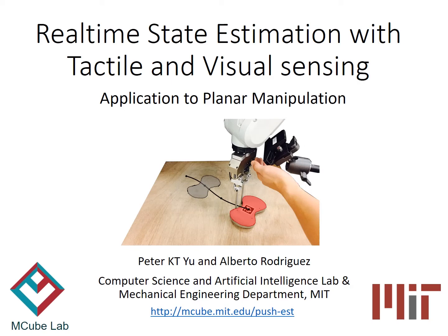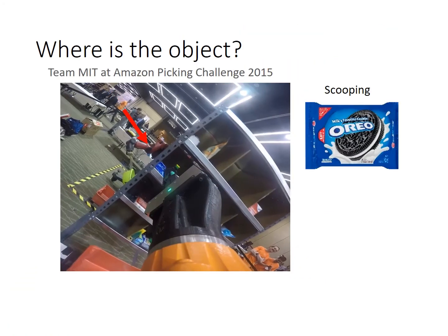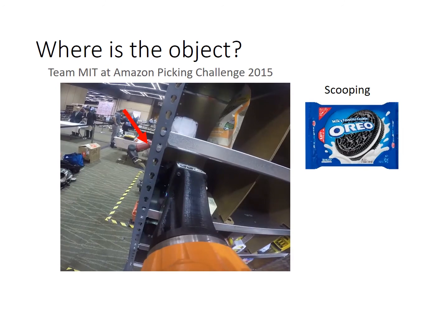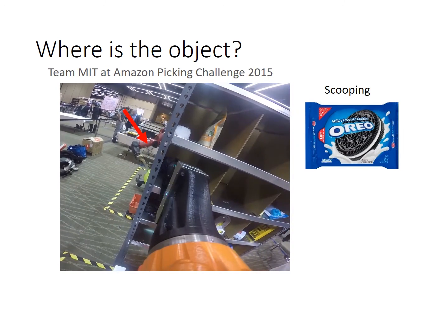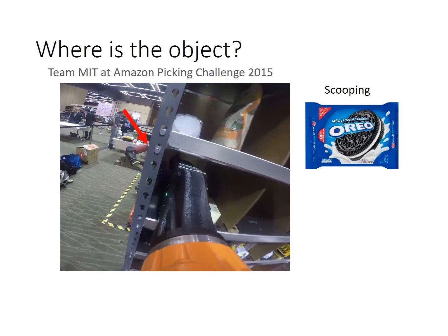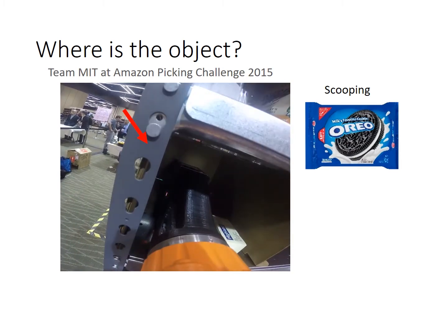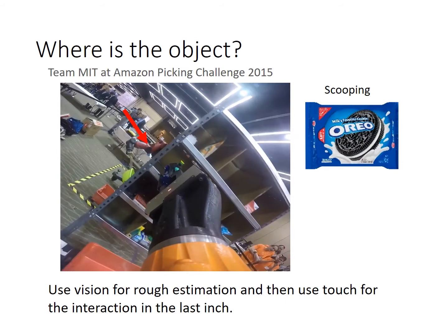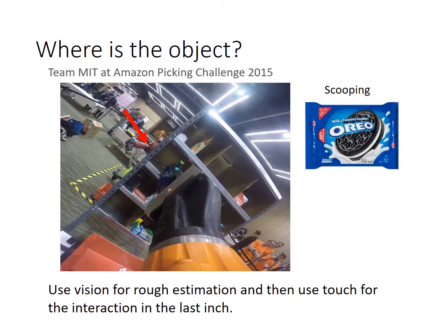This video presents a real-time state estimation framework using tactile and visual sensing, conducted at MIT M-Cube Lab. The question we are asking is: where is the object during robot manipulation? During the process, occlusions often occur. To compensate for occlusions, we need tactile sensing. We propose to use vision for rough estimation, and then use touch for interaction in the last inch.